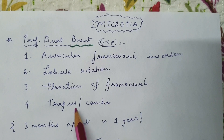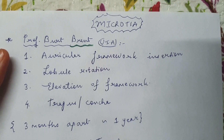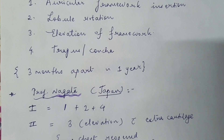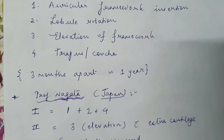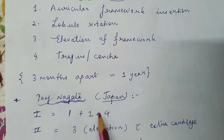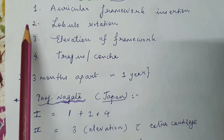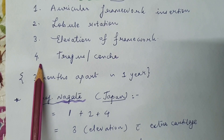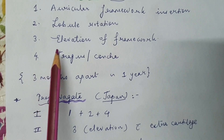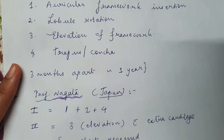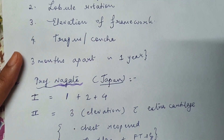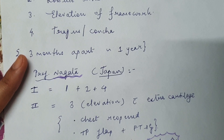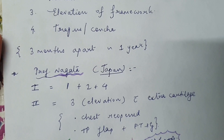Professor Nagata from Japan has described completing this in two stages. In his first stage, he combines Brent's first, second, and fourth stages — performing auricular framework insertion, lobule rotation, and creation of the tragus and concha together. In the second stage he performs elevation of the framework alone, supported by extra harvested cartilage requiring the chest to be reopened — considered a drawback. A temporoparietal fascial flap is used to cover this and it is resurfaced with a full-thickness skin graft.